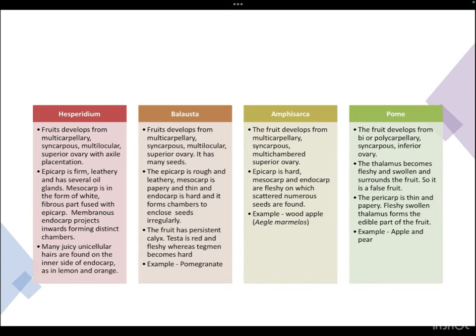Hesperidium fruits develop from multicarpillary syncarpus multilocular superior ovary with axile placentation. The epicarp is firm and leathery with several oil glands; the mesocarp is a white fibrous part fused with the epicarp; the membranous endocarp projects inward forming distinct chambers. Many juicy unilocular hairs are found on the inner side of the endocarp. Examples include orange, tangerine, lemon, and mosambi.